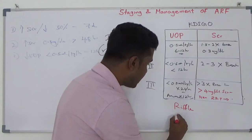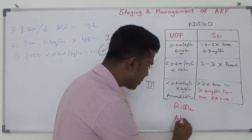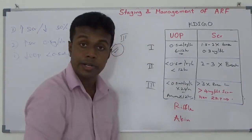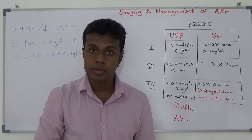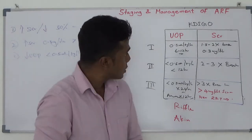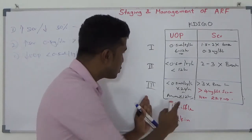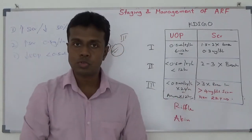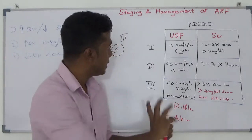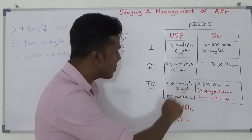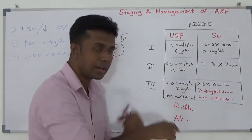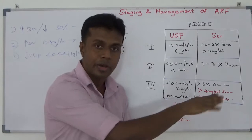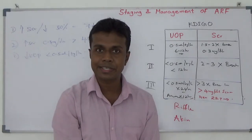The other one is the AKIN criteria — Acute Kidney Injury Network criteria. Those are also used, mostly with urine output and serum creatinine, but lack of time factors and other considerations led to removal of those two criteria.